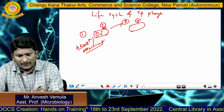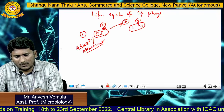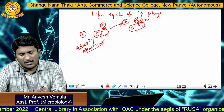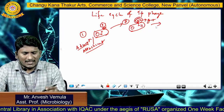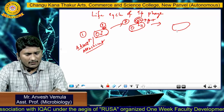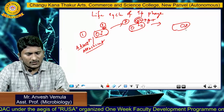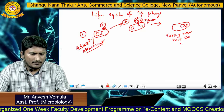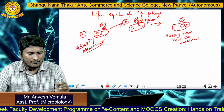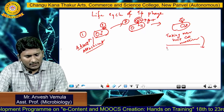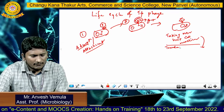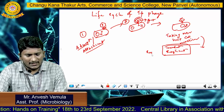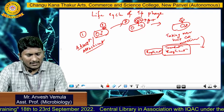Once attachment is complete, they proceed to the second step called penetration. In this penetration step, the DNA of the virus particle will enter the cytoplasm of the host cell. The virus particle without genetic material is called a ghost. Once penetration is complete, the virus will start taking over the host cell machinery, and the viral DNA will undergo translation followed by replication, synthesizing the desired products using the host cell machinery.